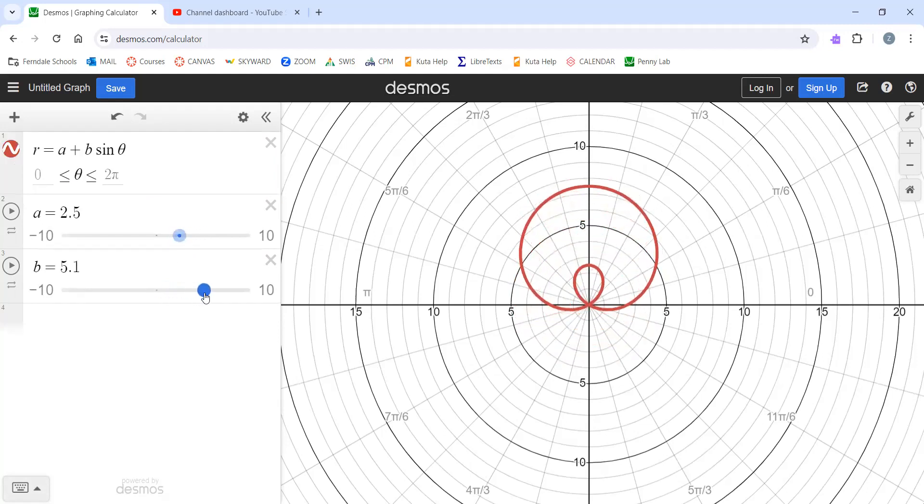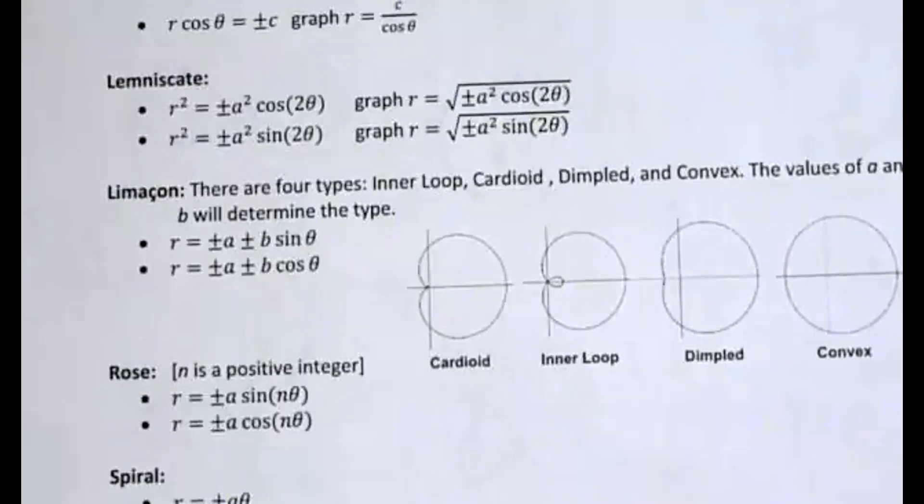So if I start messing with this, ooh, that's interesting. This looks like one of the graphs that's on my sheet. It's got that little loop-de-loop on the inside of it. Let me go back to my sheet here and see if we can find one that kind of matches that. We're looking for that little loop-de-loop.